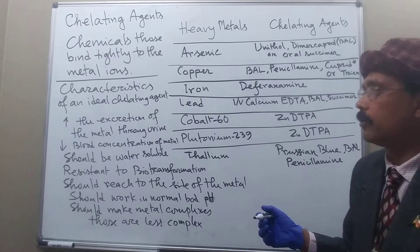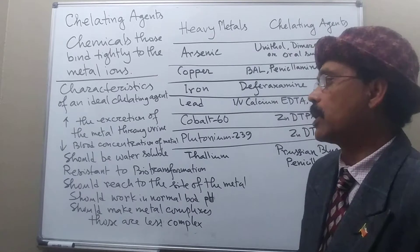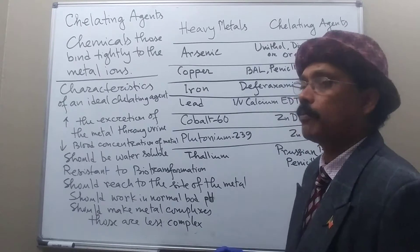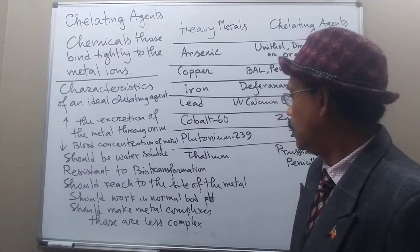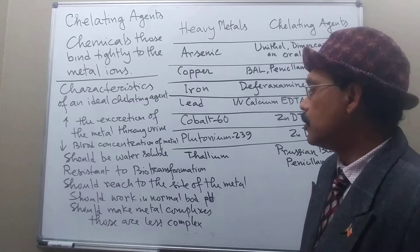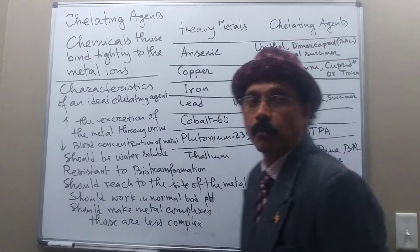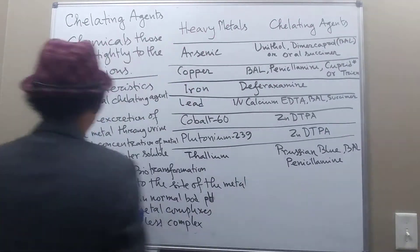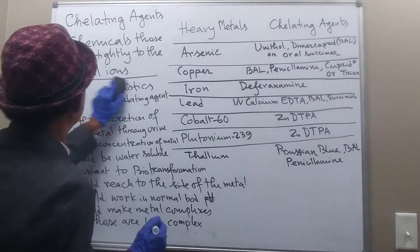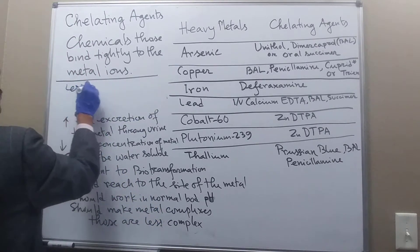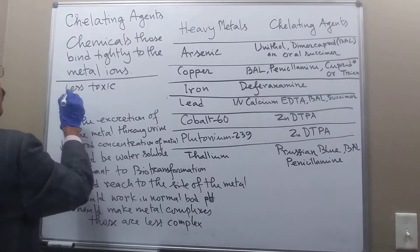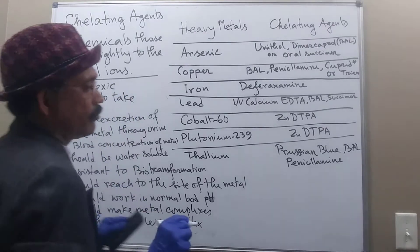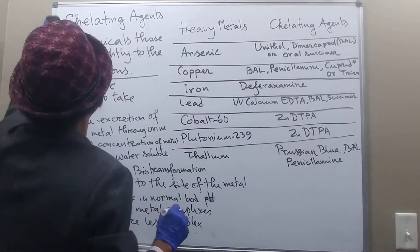In summary, the characteristics of an ideal chelating agent are: it should increase excretion of metal through urine, decrease blood concentration of metal, be water-soluble, be resistant to biotransformation, reach the site of metal anywhere — in the brain or bone — work at normal blood pH, form less toxic metal complexes, be less toxic itself, and be easy to take.